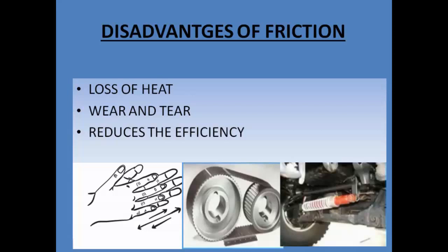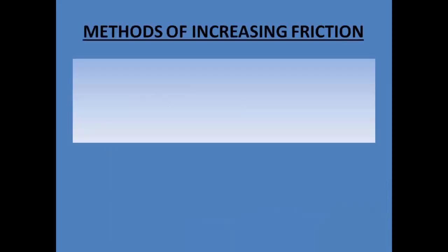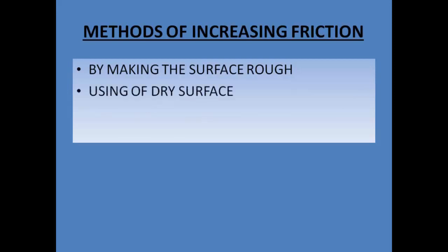After we have gone through the advantages and disadvantages of friction, let us now study how we can increase the friction or reduce the friction. Let us first take a look at the methods of increasing friction. There are three methods as shown: by making the surface rough, by using a dry surface, and by increasing the weight of the object.